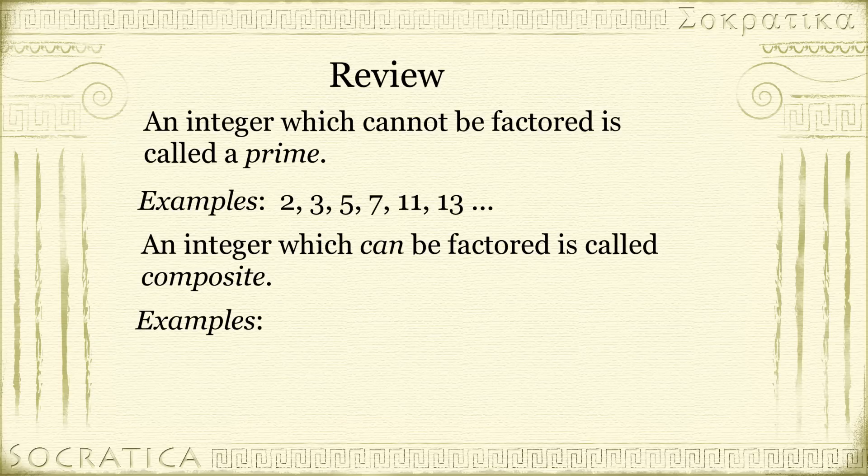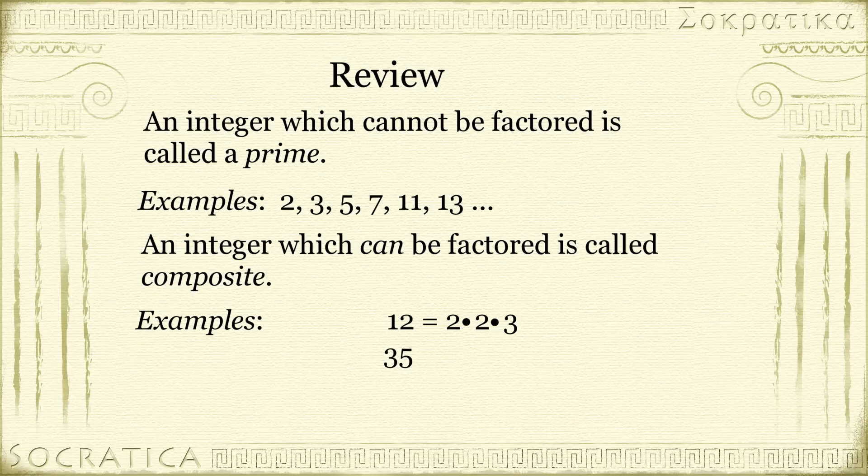Let's see some examples. 12 can be factored as 2 times 2 times 3. 35 can be factored as 5 times 7. You can't factor it any further. 5 and 7 are prime.